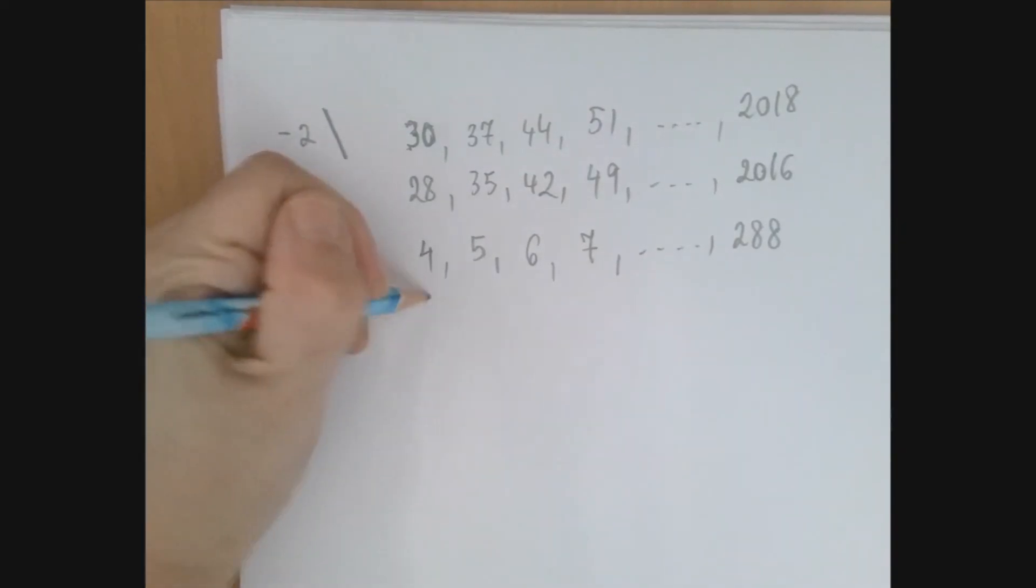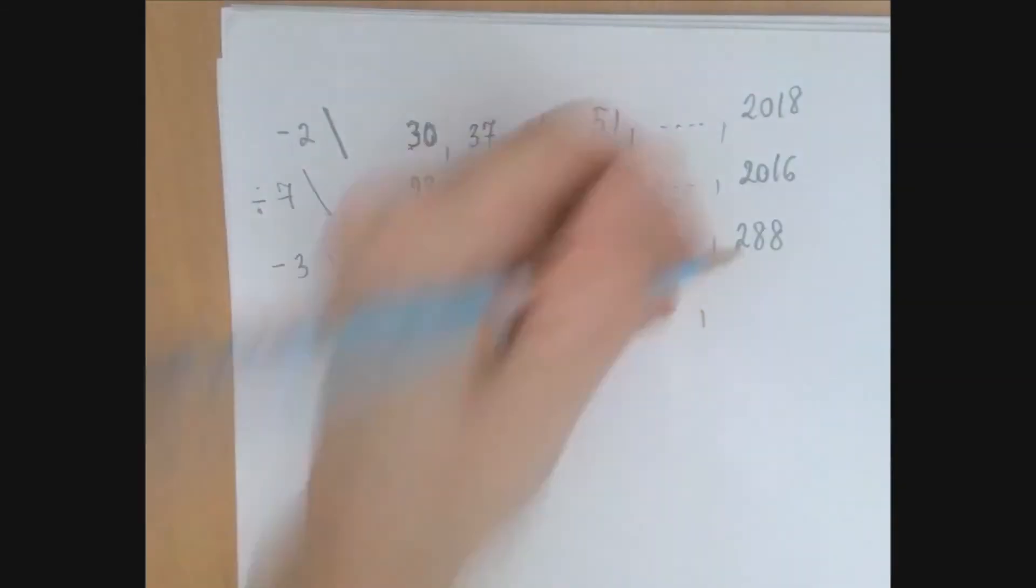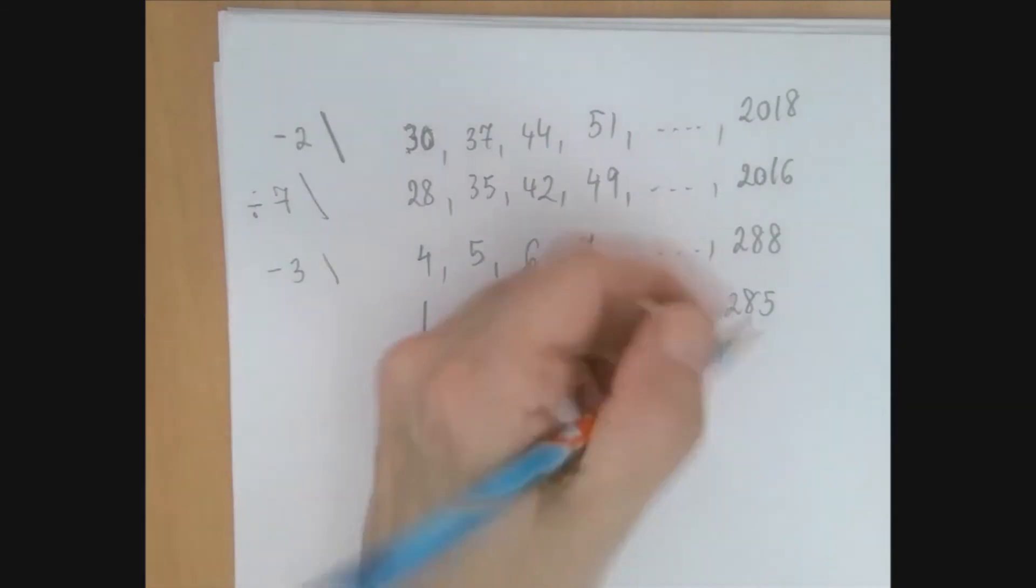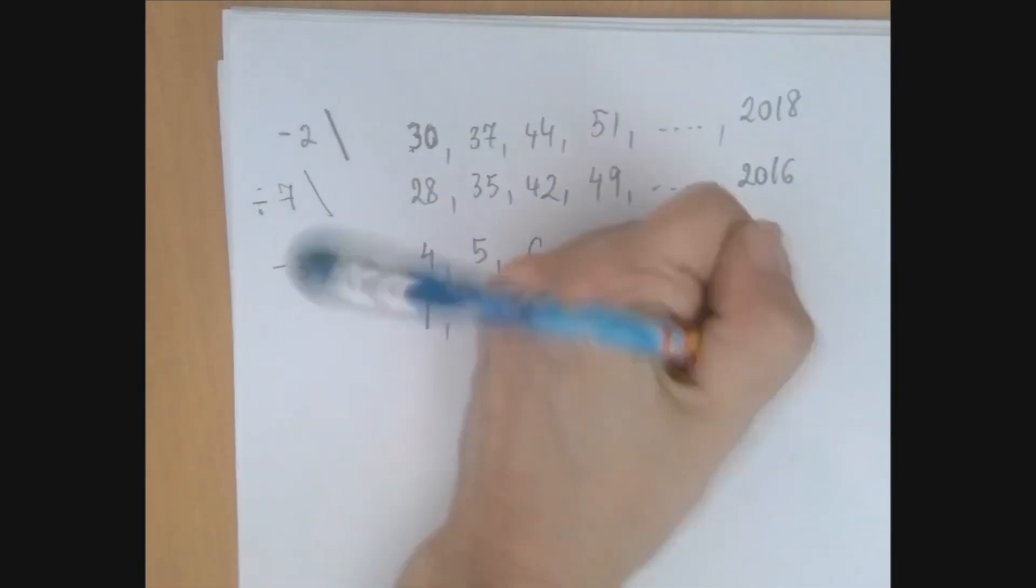Because then 4 will be transferred to 1, 5 will be 2, 6 will be 3, and so on. And this would be 285. And then we list the numbers starting from 1, increasing by 1. The last number is the number of numbers. So we have 285 many numbers.